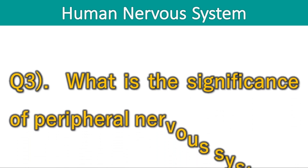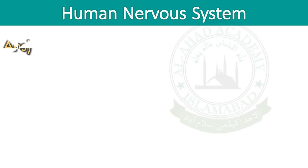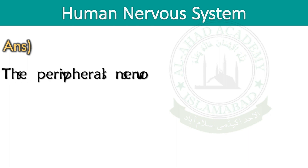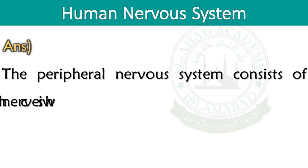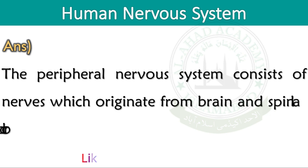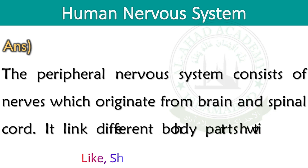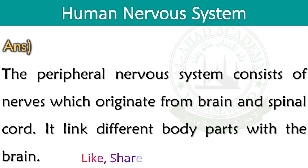Question number 3. What is the significance of the peripheral nervous system? The peripheral nervous system consists of nerves which originate from the brain and spinal cord. It links different body parts with the brain.